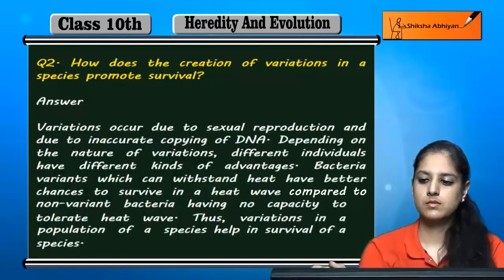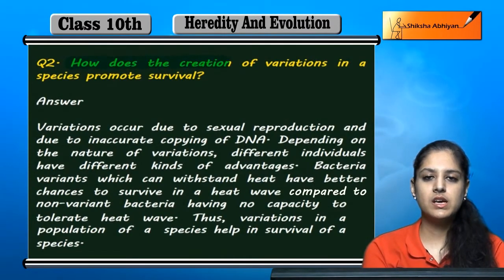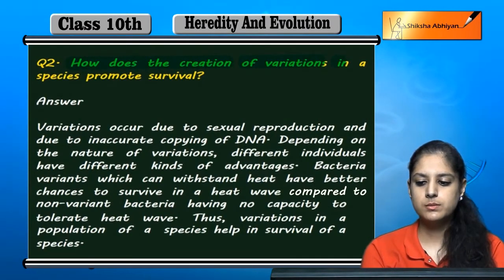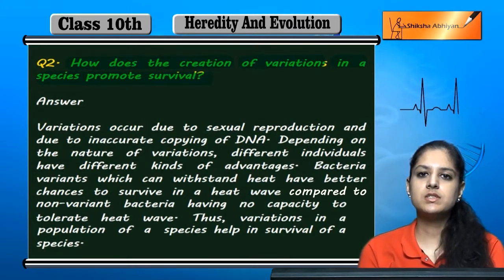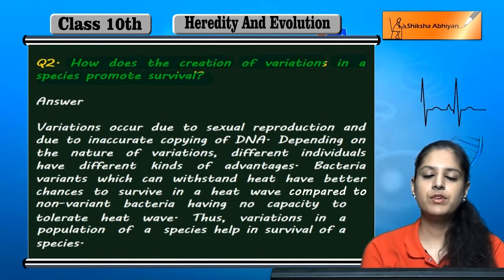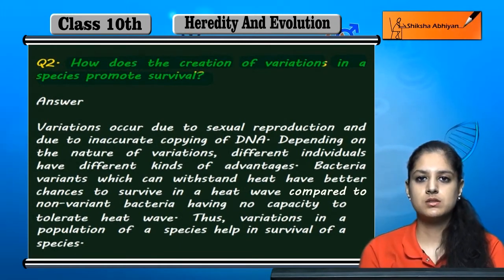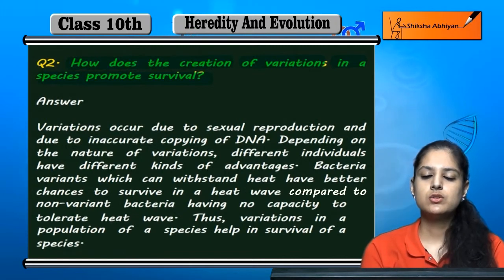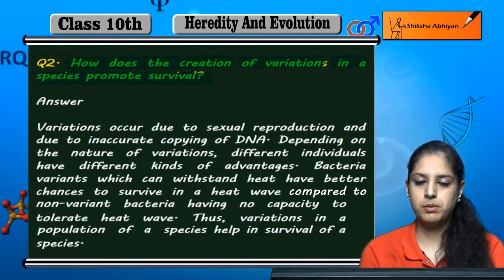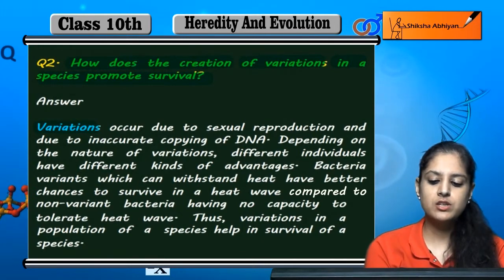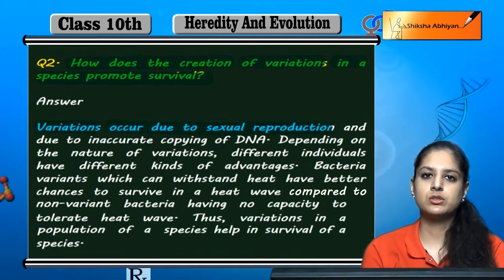Question 2: How does the creation of variations in a species promote survival? If a variation creates a positive effect, the variations occur due to sexual reproduction, which creates little differences among individuals.